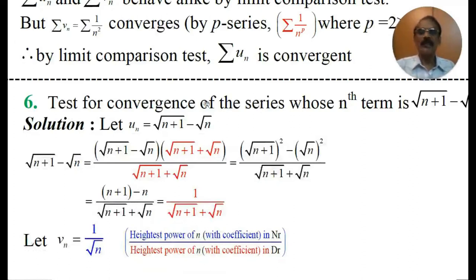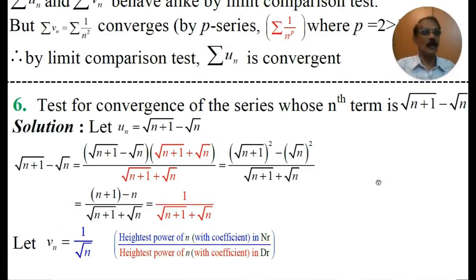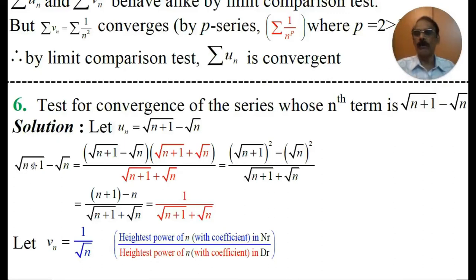Test for the convergence of the series whose nth term is √(n+1) − √n. For such problems involving radical symbols, we have to use rationalization. We rationalize √(n+1) − √n. Since we have a minus sign, the rationalizing factor will be √(n+1) + √n.